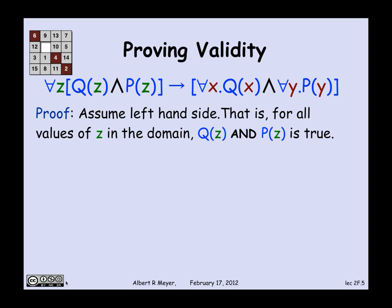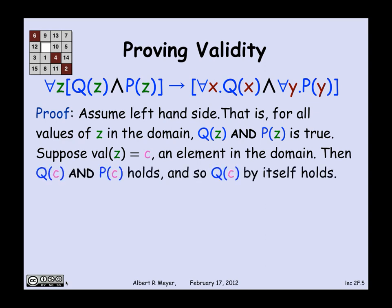What's the left-hand side say? It says that for every z, Q of z holds and P of z holds. That means that for every possible environment that assigns a value to z, Q of z and P of z both come out to be true. Suppose that the environment assigns the value c to z, where c is some element in the domain. Then what this means is that in that environment, Q of c and P of c holds. So Q of c certainly holds all by itself.